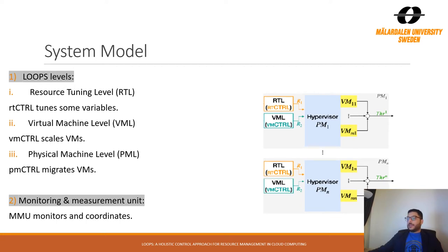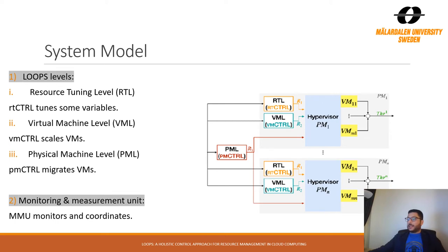The second level, VML, and via its VM controller performs vertical scaling by adding or removing resources or perform horizontal scaling by adding or removing VMs to the system. The third level, PML, and via its controller performs the dynamic VM placement from one host to another within the data center.